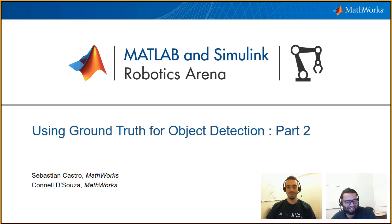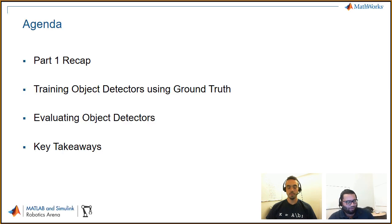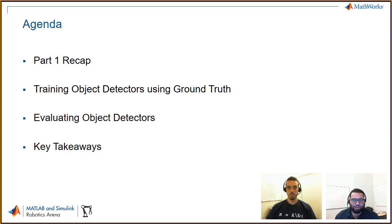So in the last part we talked about what ground truth was and how we collected it in MATLAB. In this video we're going to talk about using this ground truth to actually train some kind of object detector. We're going to do a quick recap about part one, talk about how we labeled the ground truth, then get into the meat of today's topic which is training the object detectors using this ground truth data. Then we'll talk about how to evaluate the object detectors you've trained, and then do key takeaways and point you to resources.